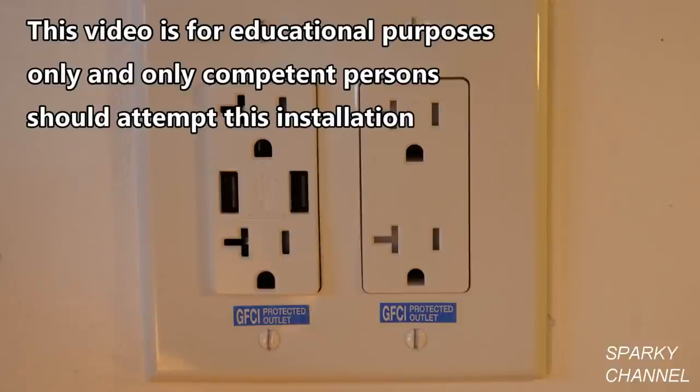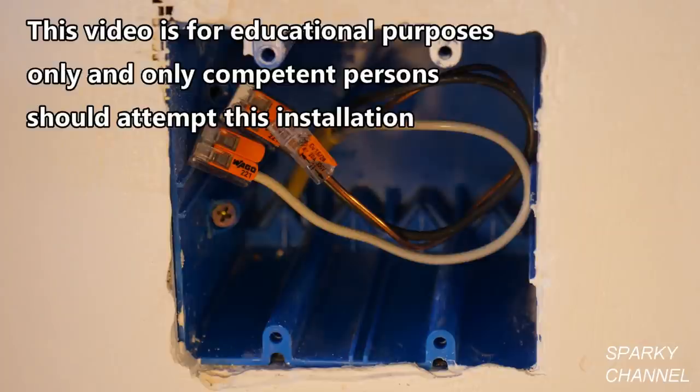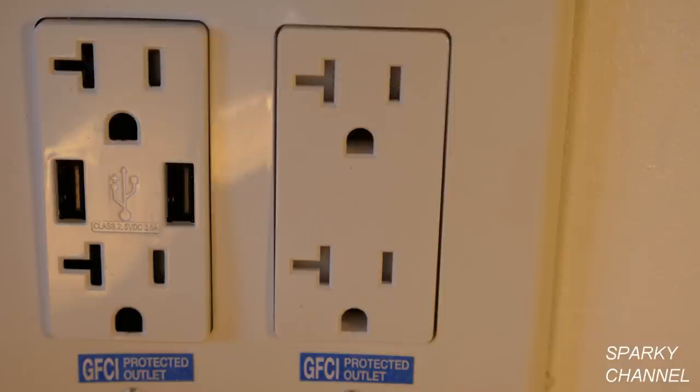Today I'm going to show you how to install two duplex receptacles in a two-gang box. The two receptacles that I'm going to install are going to be 20-amp duplex receptacles. One of the 20-amp duplex receptacles is going to be a combination duplex receptacle and USB charger.